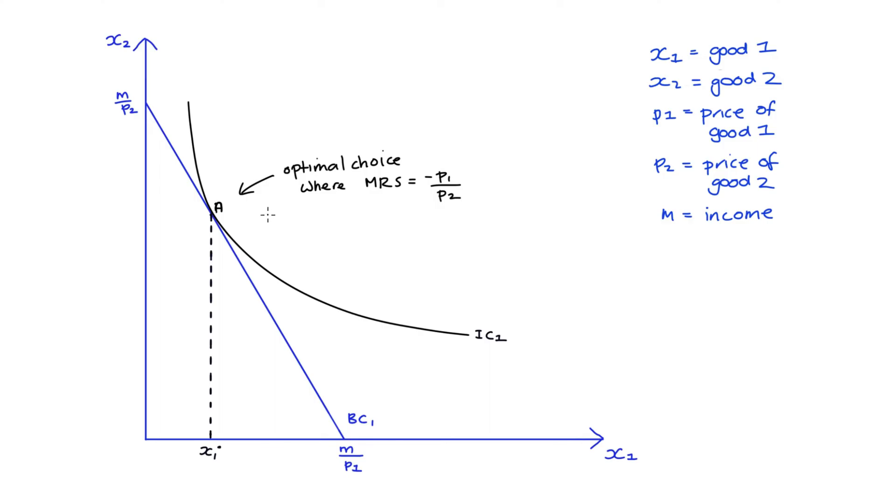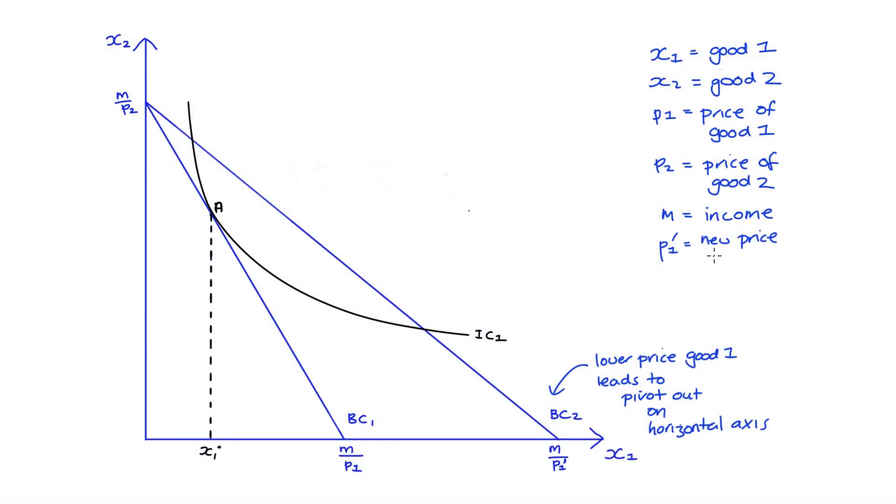The first thing that's going to happen is a pivot of the budget constraint outwards and the intercept on our horizontal axis is going to be further out before. So a new budget constraint and I'll name it BC2. An easy way to see why this has happened is to recall that our axis intercepts represent how much of a good that we can afford if we spend all of our income on that good. And we find our intercepts by dividing our income, which is M, by the price.